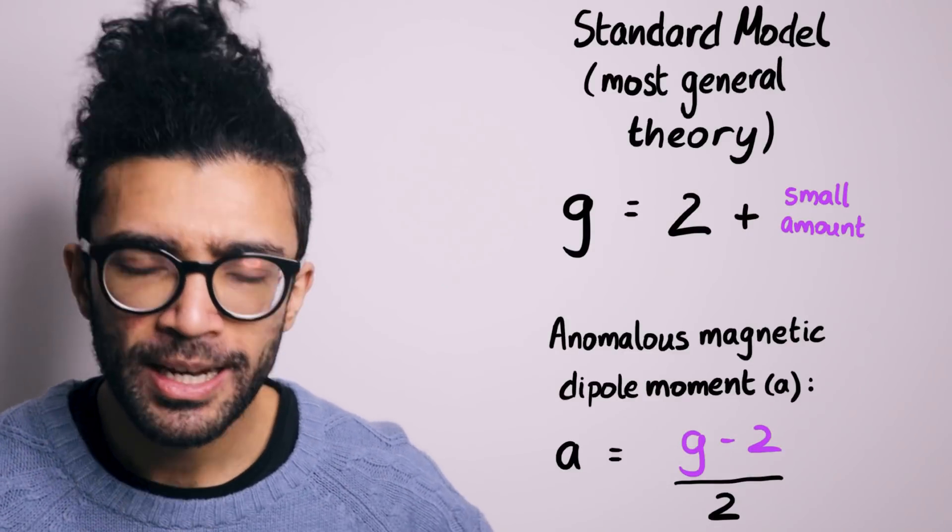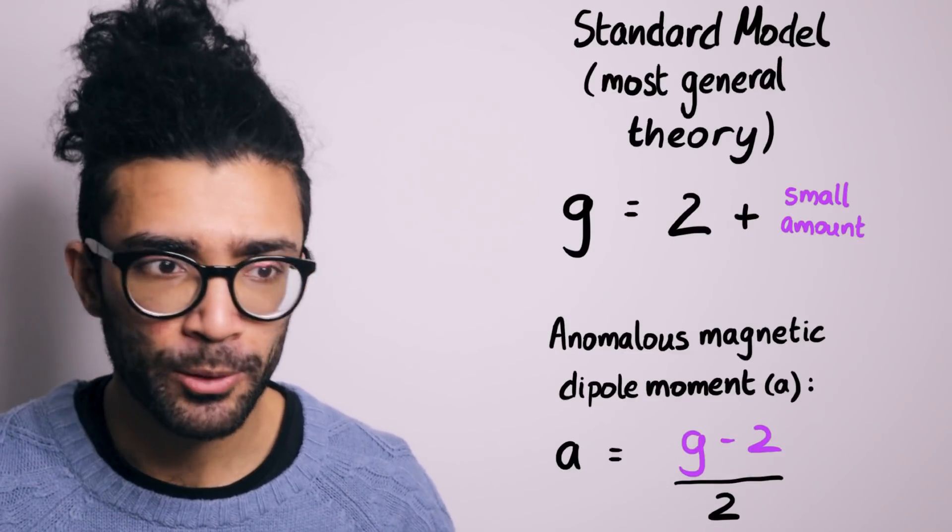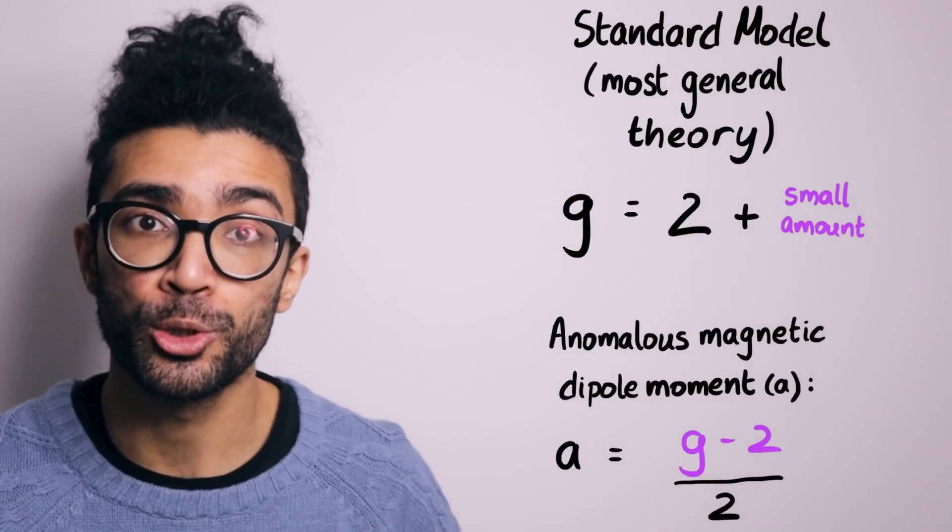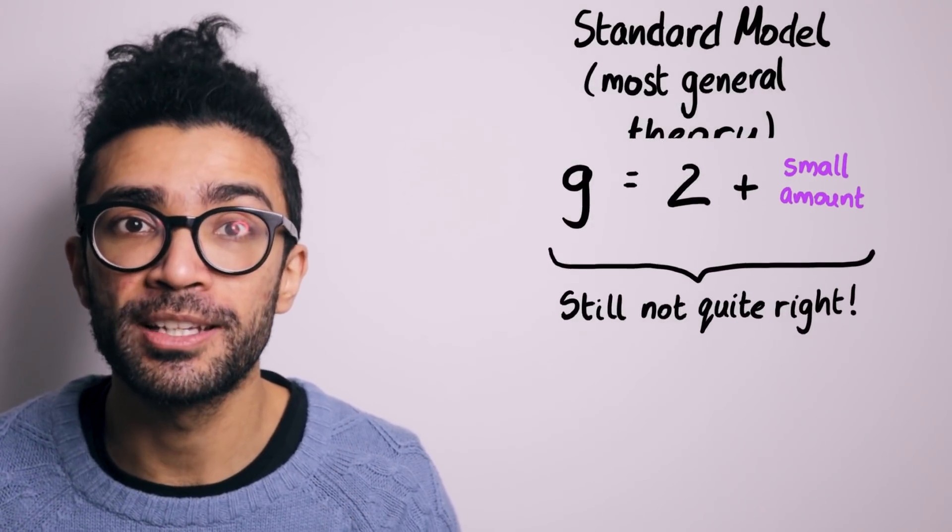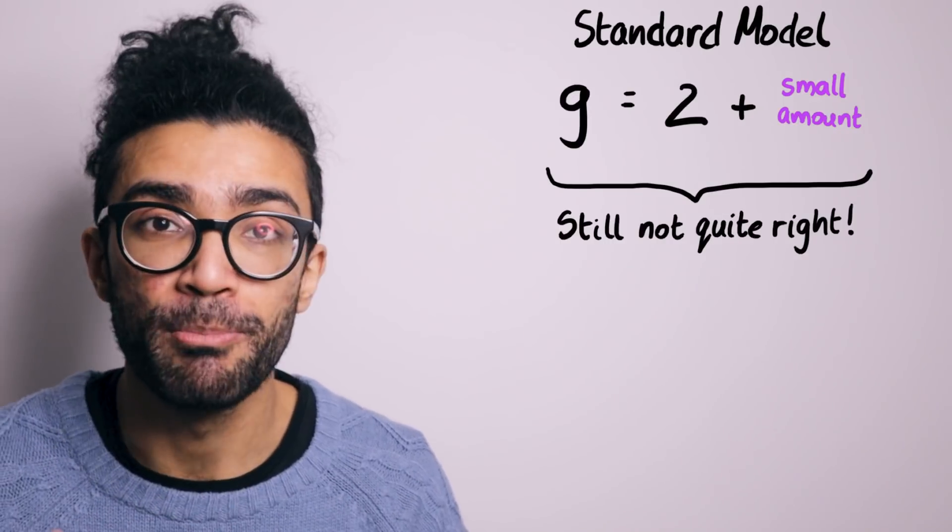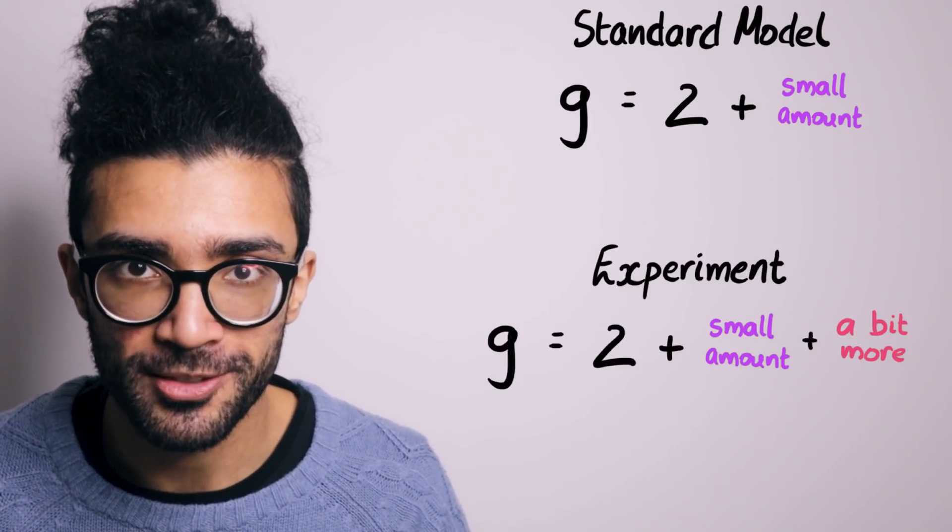But here's the problem. When we account for all of the physics that we do know, and we calculate what the value of g should be, that's still slightly different to what we find the value of g to be when we actually measure it experimentally with our muons.